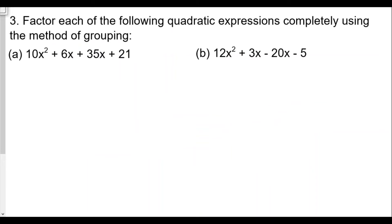Question number three: factor each of the quadratic expressions completely using the method of grouping. We see here that we're going to group each pair together. So we'll get for the first pair we're going to have 10x² + 6x, then we'll group the second pair together, 35x + 21.